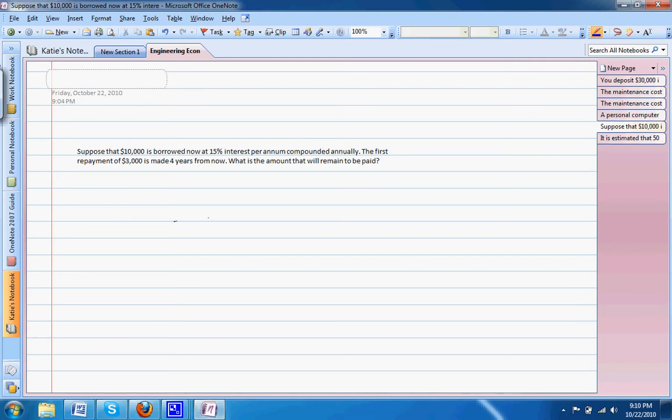If we draw our cash flow diagram, in the present $10,000 was deposited. We're trying to find the future amount left to be repaid in year N. $3,000 was withdrawn four years from now.